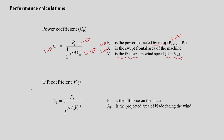Another important term used in calculating the performance of the wind machine is the lift coefficient, represented as C suffix capital L. The lift coefficient of the blade of a wind rotor is the ratio of lift force to the force of the free stream wind speed. Here F_L is the lift force on the blade, and A_B represents the projected area of the blade facing the wind.